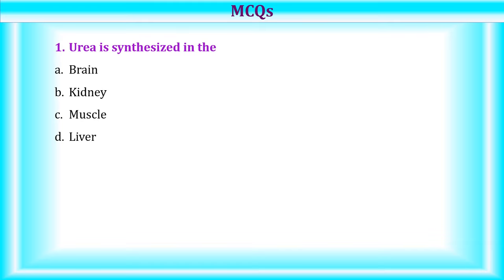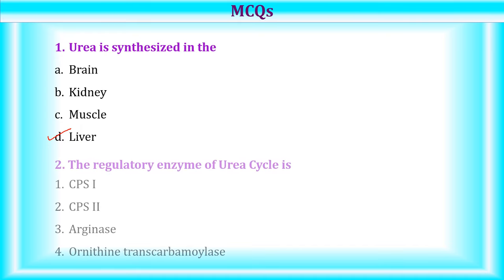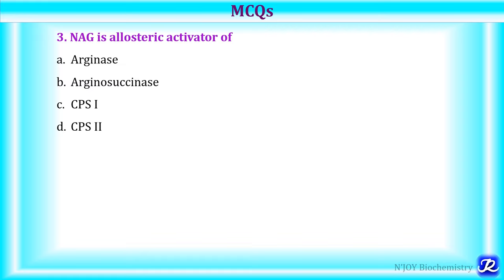MCQ 1: Urea is synthesized in — brain, kidney, muscle, or liver? Answer: liver (option D). MCQ 2: The regulatory enzyme of the urea cycle is CPS1, CPS2, arginase, or ornithine transcarbamoylase? Answer: CPS1 (option 1). MCQ 3: N-acetylglutamate is an allosteric activator of arginase, arginosuccinase, CPS1, or CPS2? Answer: CPS1 (option C), as it is the regulatory enzyme of the urea cycle regulated by allosteric mechanism.